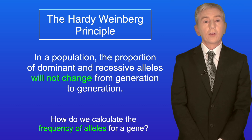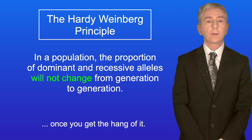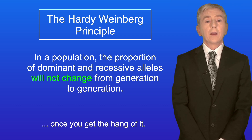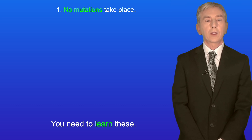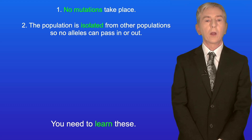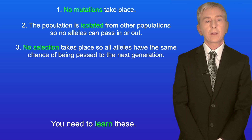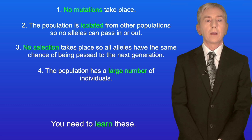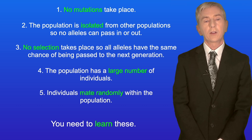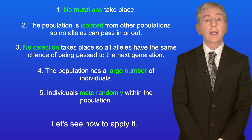So how do we calculate the frequency of alleles for a gene? Well to do that we use the Hardy-Weinberg principle. This sounds tricky but it's actually quite straightforward once you get the hang of it. The Hardy-Weinberg principle states that in a population the proportion of dominant and recessive alleles will not change from generation to generation. Now this depends on five conditions being met, and you need to learn these: number one, no mutations take place; number two, the population is isolated from other populations so no alleles can pass in or out; number three, no selection takes place so all alleles have the same chance of being passed to the next generation; number four, the population has a large number of individuals; and number five, individuals mate randomly within the population. Now in reality it's unlikely that these conditions are ever fully met, but the Hardy-Weinberg principle is still very useful.